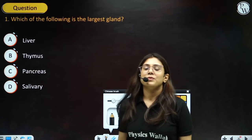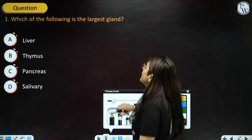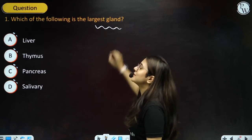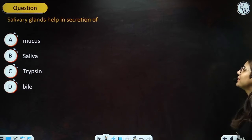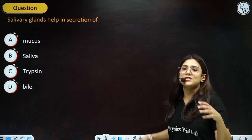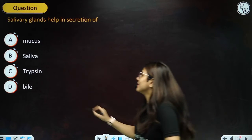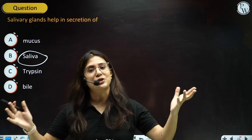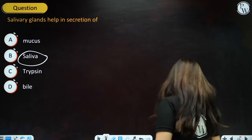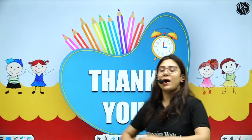Now, two questions for you. First question: which of the following is the largest gland? If you are thinking liver, your answer is absolutely right. Next question: salivary glands help in the secretion of which of the following? The answer is saliva — saliva is the juice, and it has enzymes which help in further digestion of food, particularly carbohydrates. I hope it was all clear and you had fun enjoying the basics of biology. It was all about glands and their secretions. I will see you in the next class. Till then, take care of yourself.